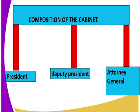We also have the cabinet secretaries. So the composition is: the president, deputy president, attorney general, and the cabinet secretaries. The cabinet secretaries are appointed by the president with the approval of the National Assembly. The president appoints and then forwards the names to the National Assembly, which approves or disapproves those appointed cabinet secretaries.